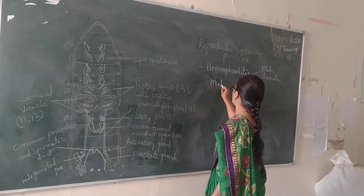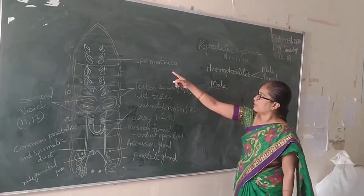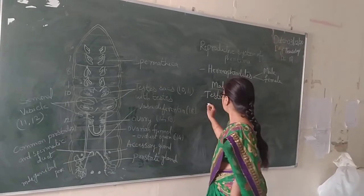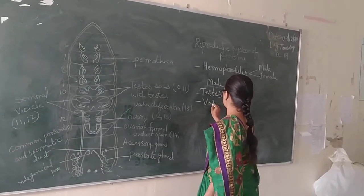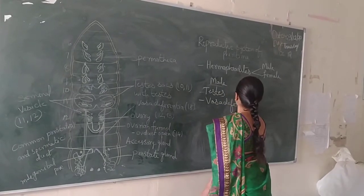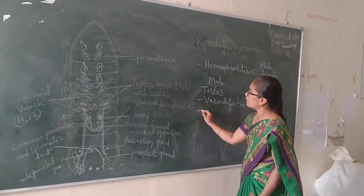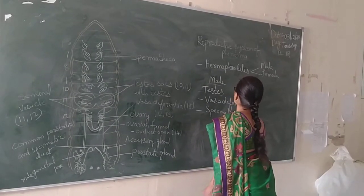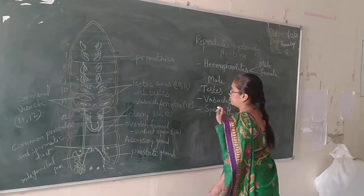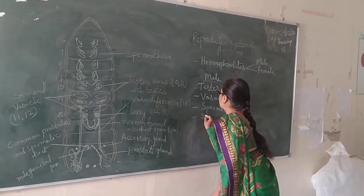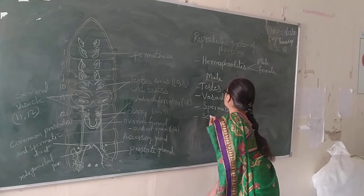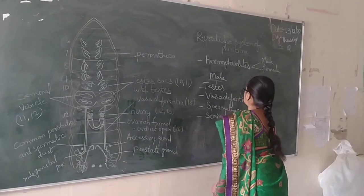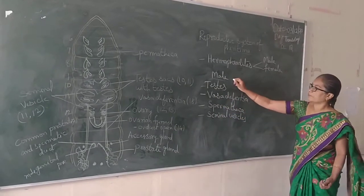In the male reproductive system, they contain the testis, Vasa Deferencia, Spermatheka, and Seminal Vesicles. These are the male reproductive organs.